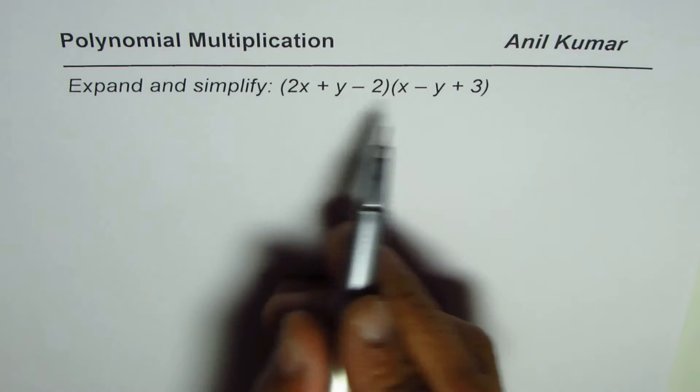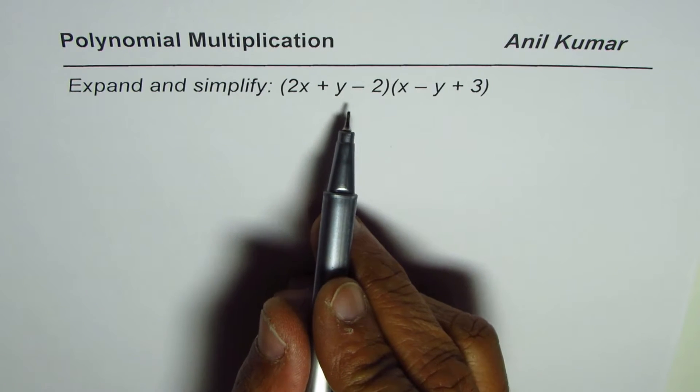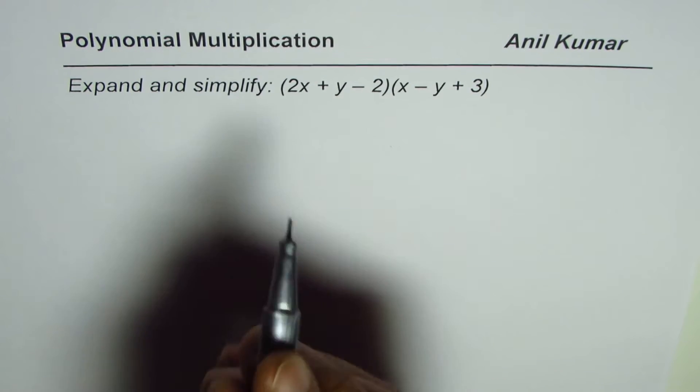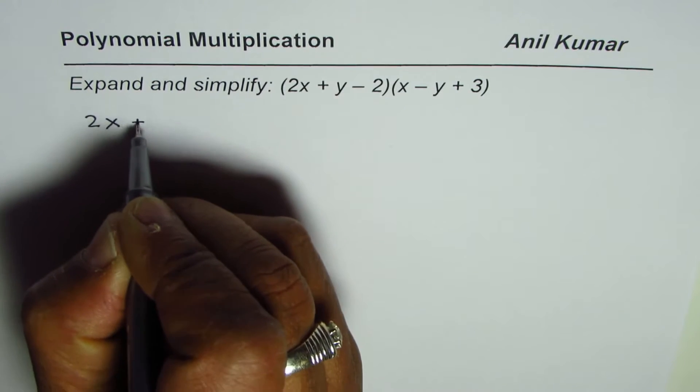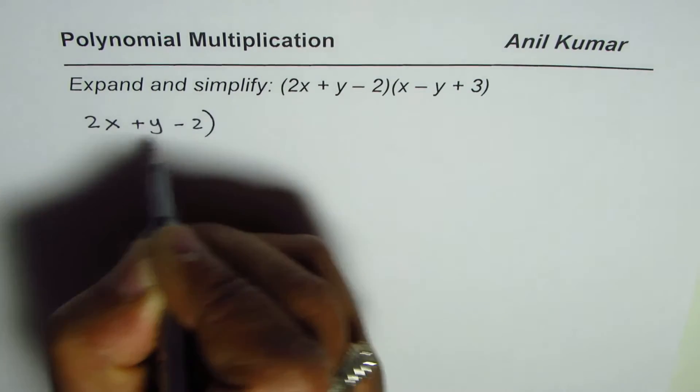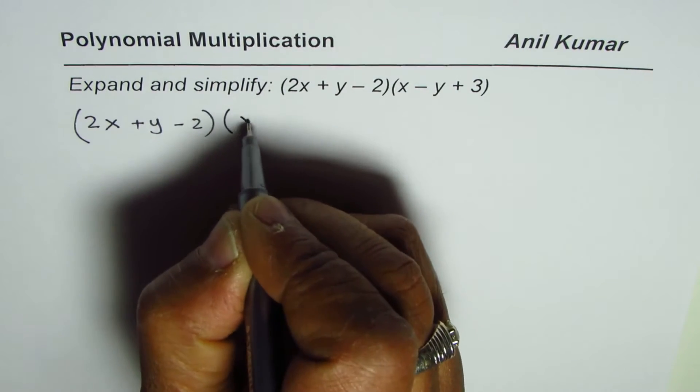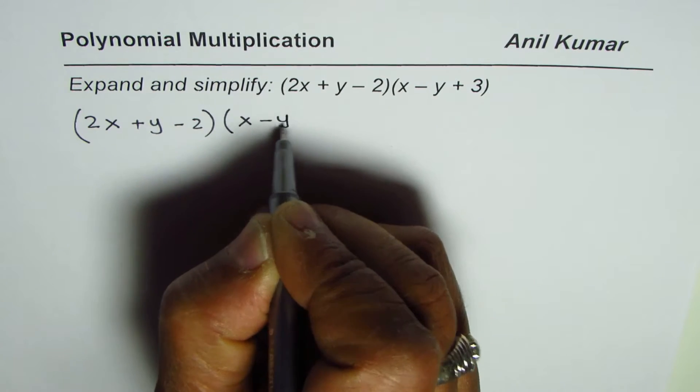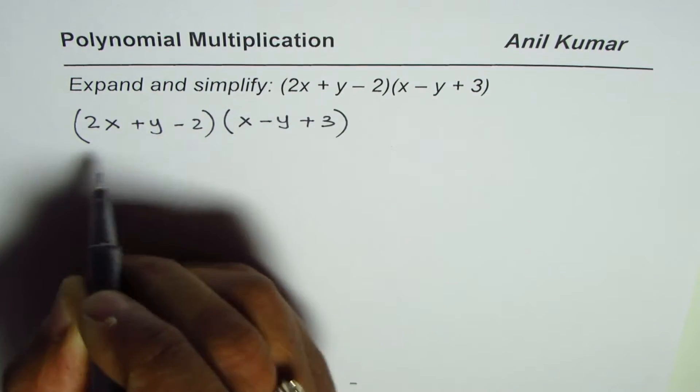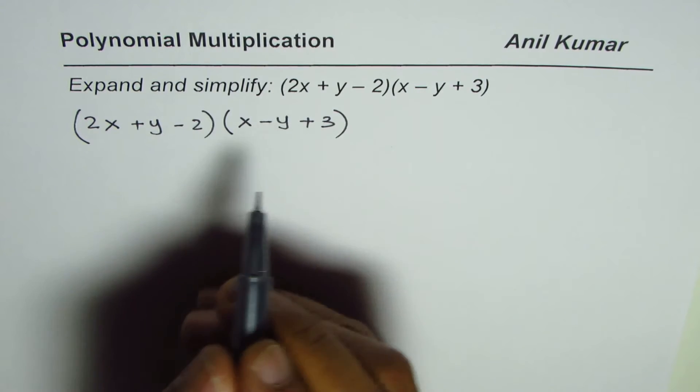Multiplication of polynomials follows the same steps. In this case, we have (2x + y - 2)(x - y + 3). We are multiplying two trinomials.